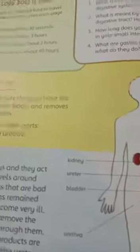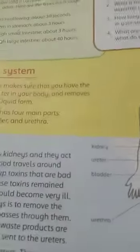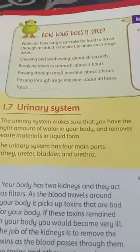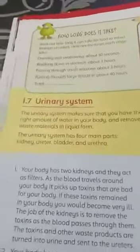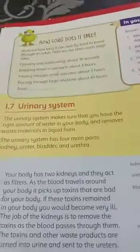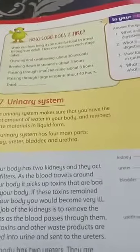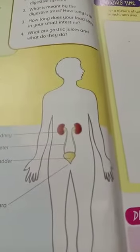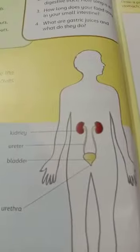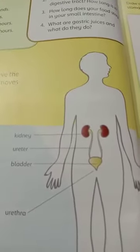Assalamu alaikum girls, open page number 16. Urinary system. The urinary system makes sure that you have the right amount of water in your body and removes waste materials in liquid form. This is the picture of the urinary system. It consists of your kidneys — a pair of kidneys.